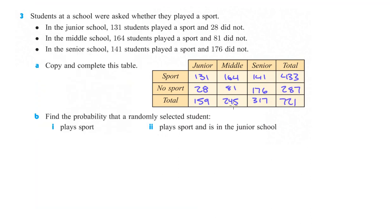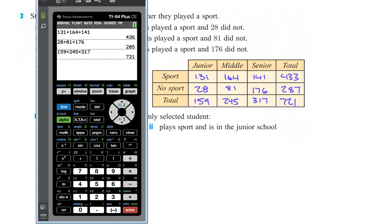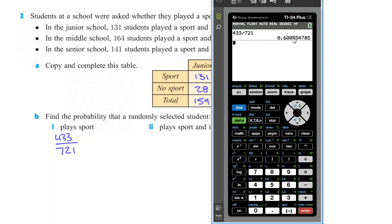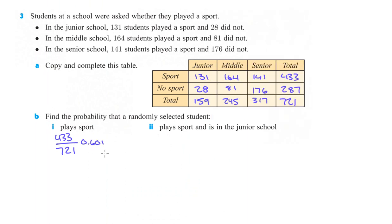We have copied and completed our table. Part B: find the probability that a randomly selected student plays a sport. We know there are 721 total students. How many of those 721 play a sport? That would be 436. So we take 436 and divide it by 721, and we get basically 60.1%.